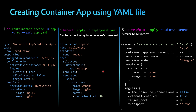If we look at the Terraform configuration, it will also be similar — when creating a new container app in Terraform, you specify the template containing the containers, the revision mode, the ingress configuration, and so on. So we have three similar approaches, and within container apps you can choose either the YAML manifest or the Terraform configuration.